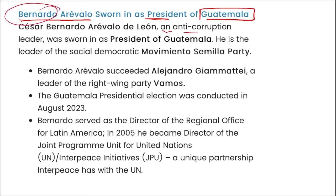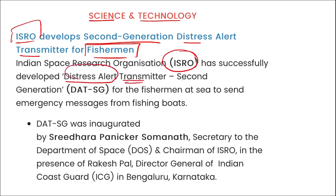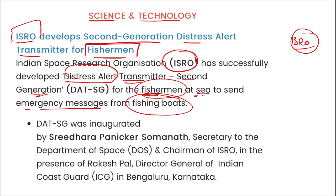In science and technology: ISRO has developed a second-generation distress alert transmitter for fishermen. ISRO developed this distress alert transmitter for second-generation use — it is for fishermen at sea and will help them send emergency messages during their fishing activities from their fishing boats. They will be able to send these emergency messages directly from their boat.